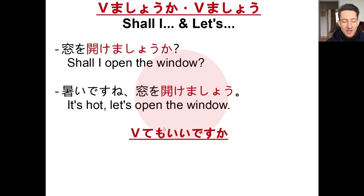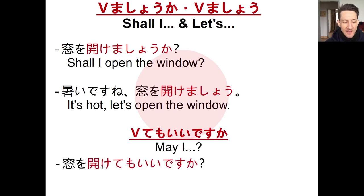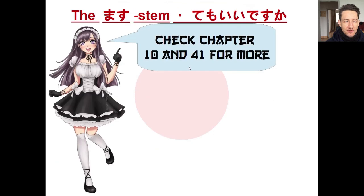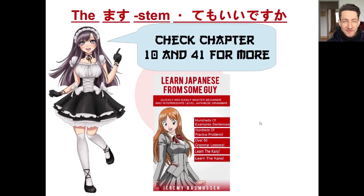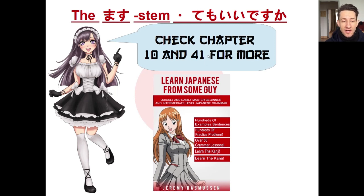As an extra note, if you want to ask for permission to do something, use te mo ii desu ka. For example, mado wo akete mo ii desu ka — may I open the window? To learn more about mashoo ka, mashoo, or te mo ii desu ka, check out chapters 10 and 41 in my textbook. I'll put links to the videos I've already made in the description.